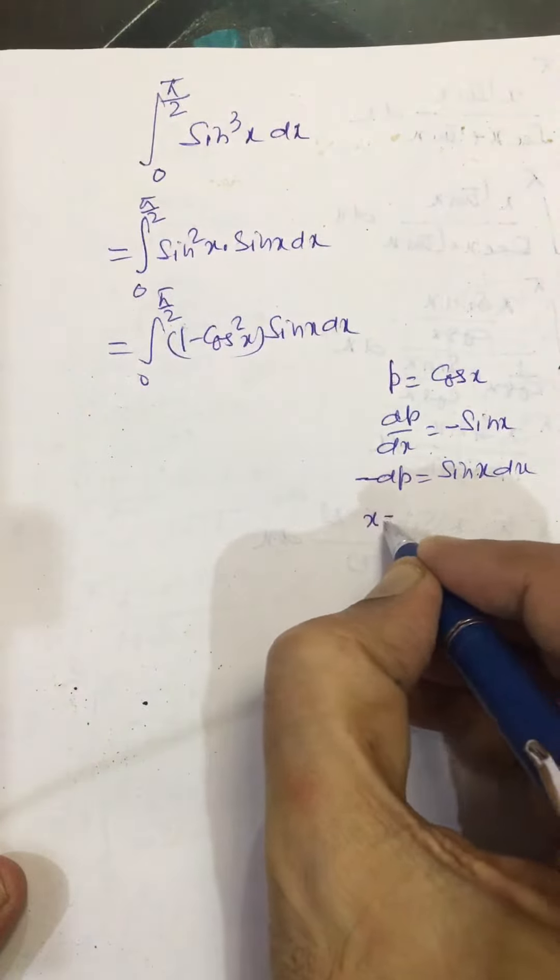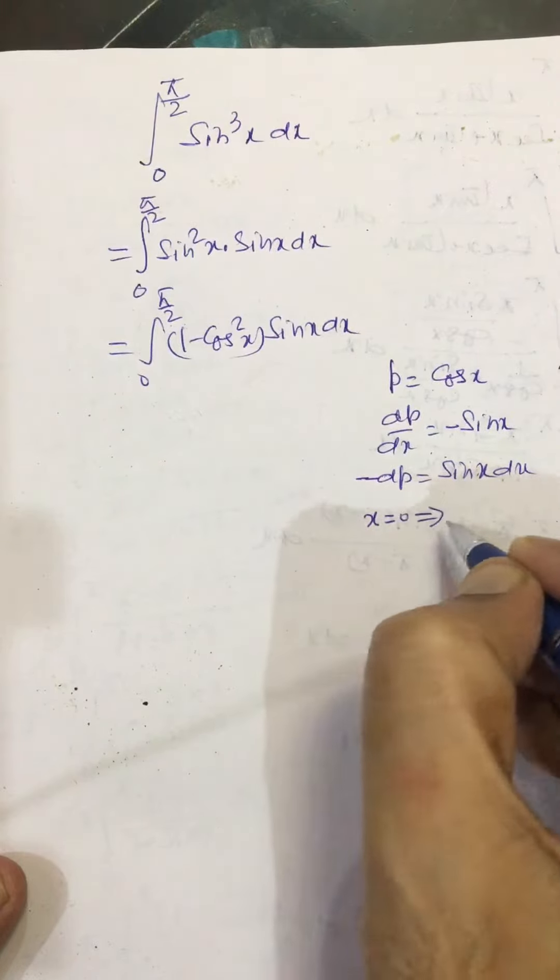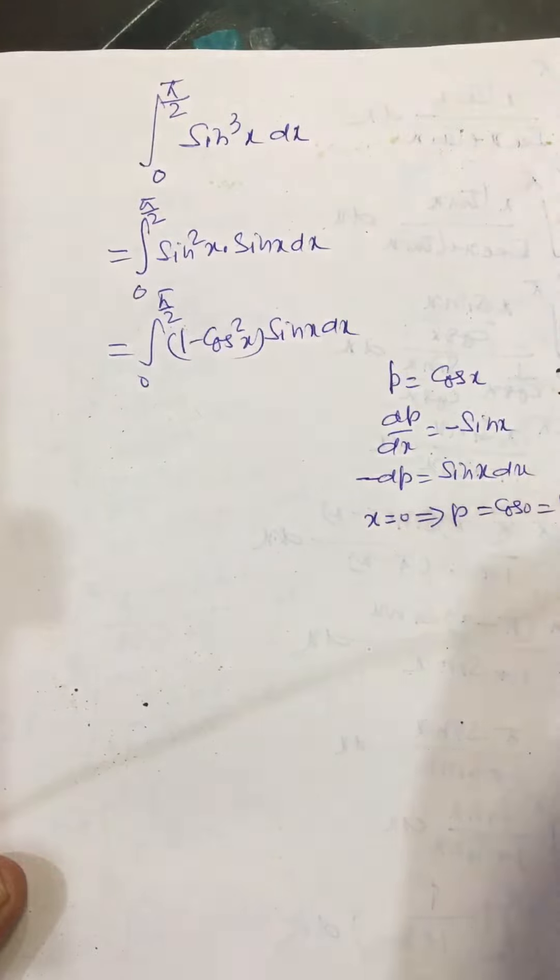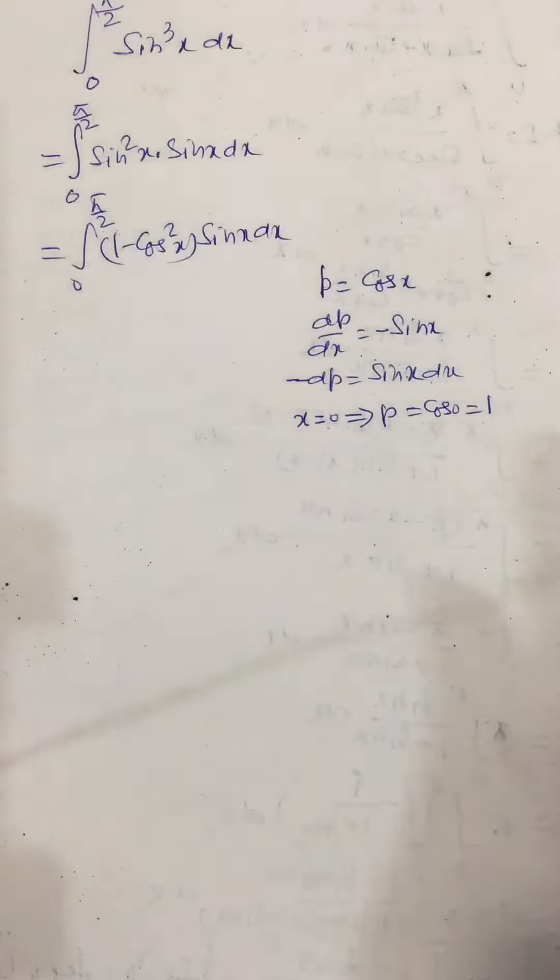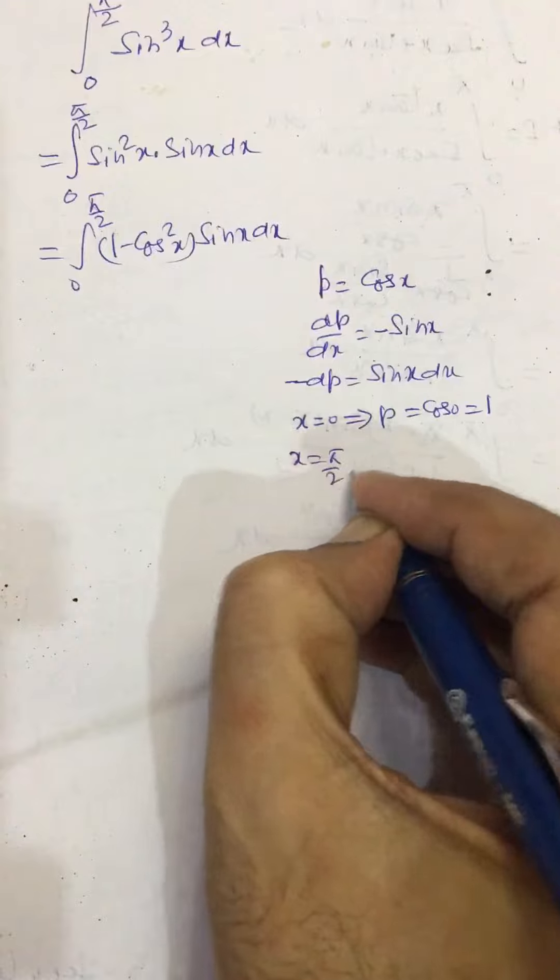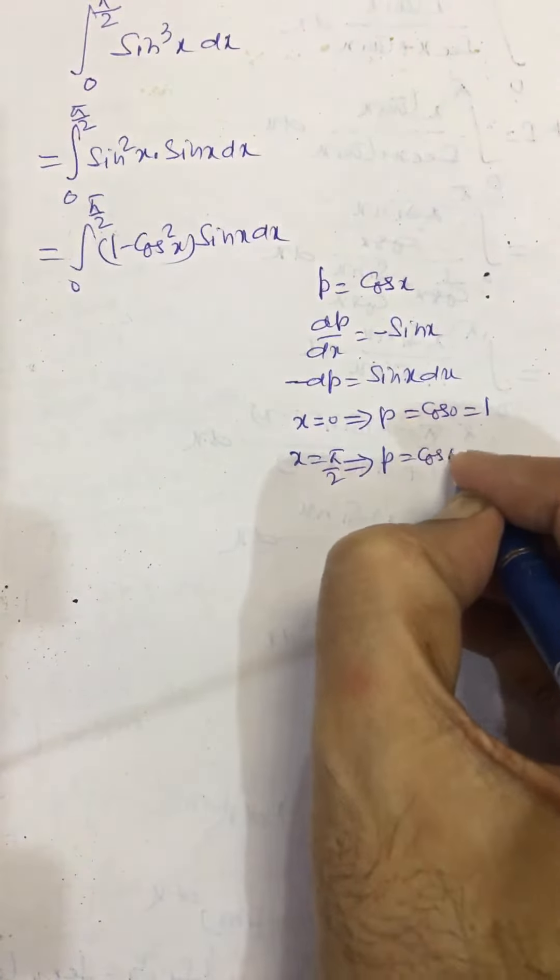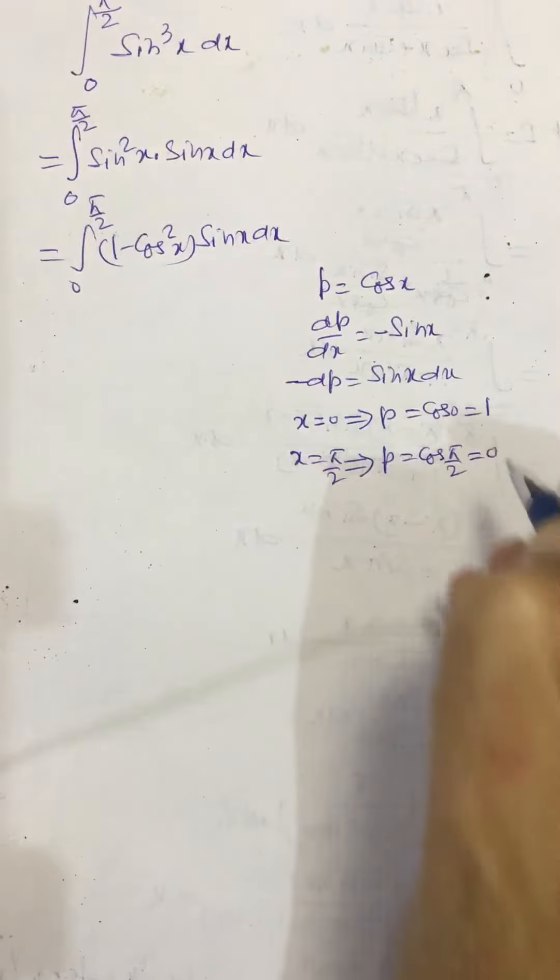When x is equal to 0, p equals cos 0 equals 1. And when x is equal to pi by 2, p equals cos pi by 2 equals 0.